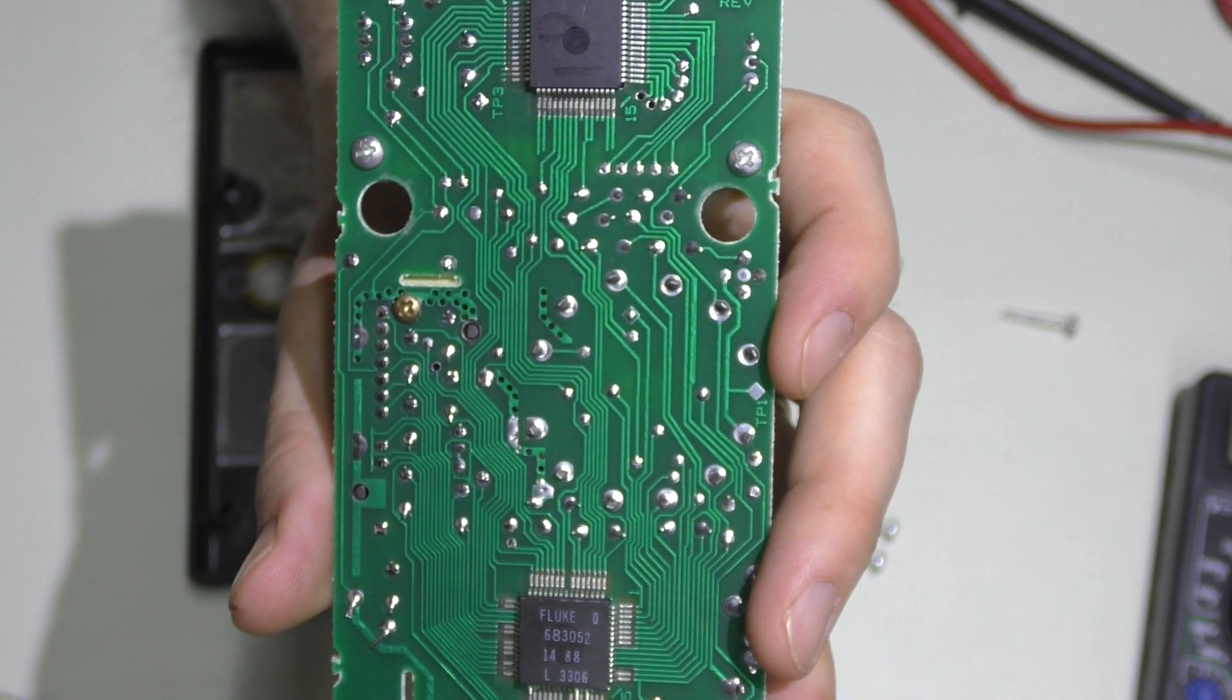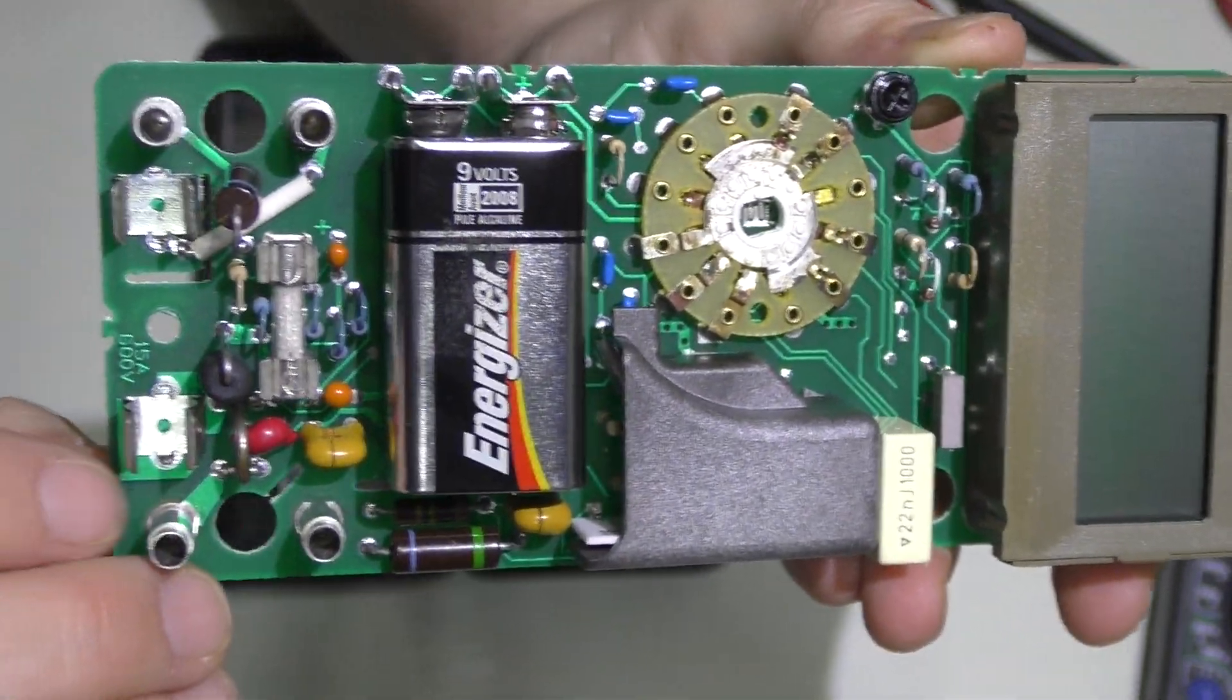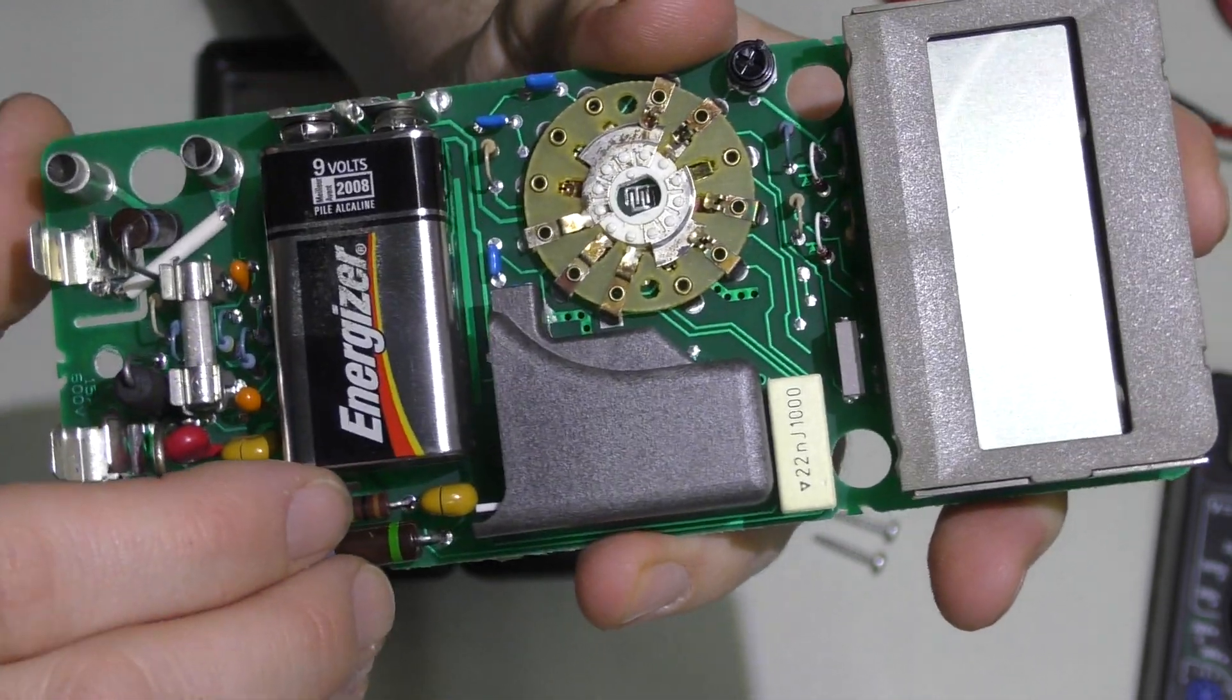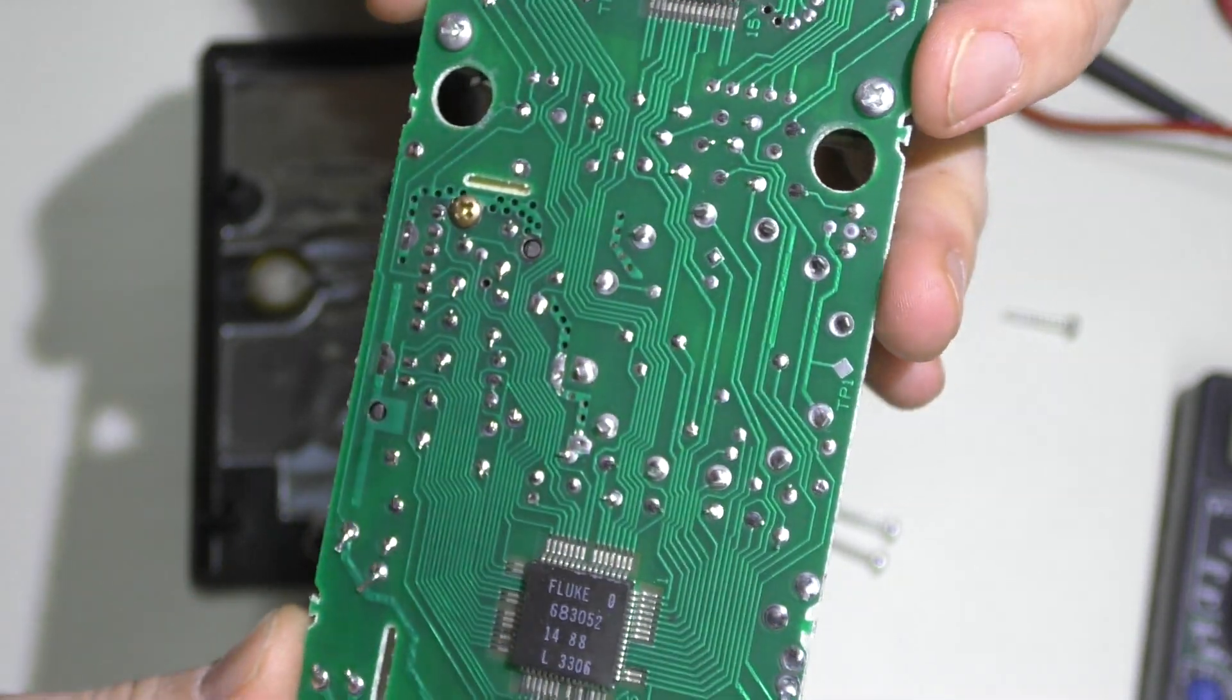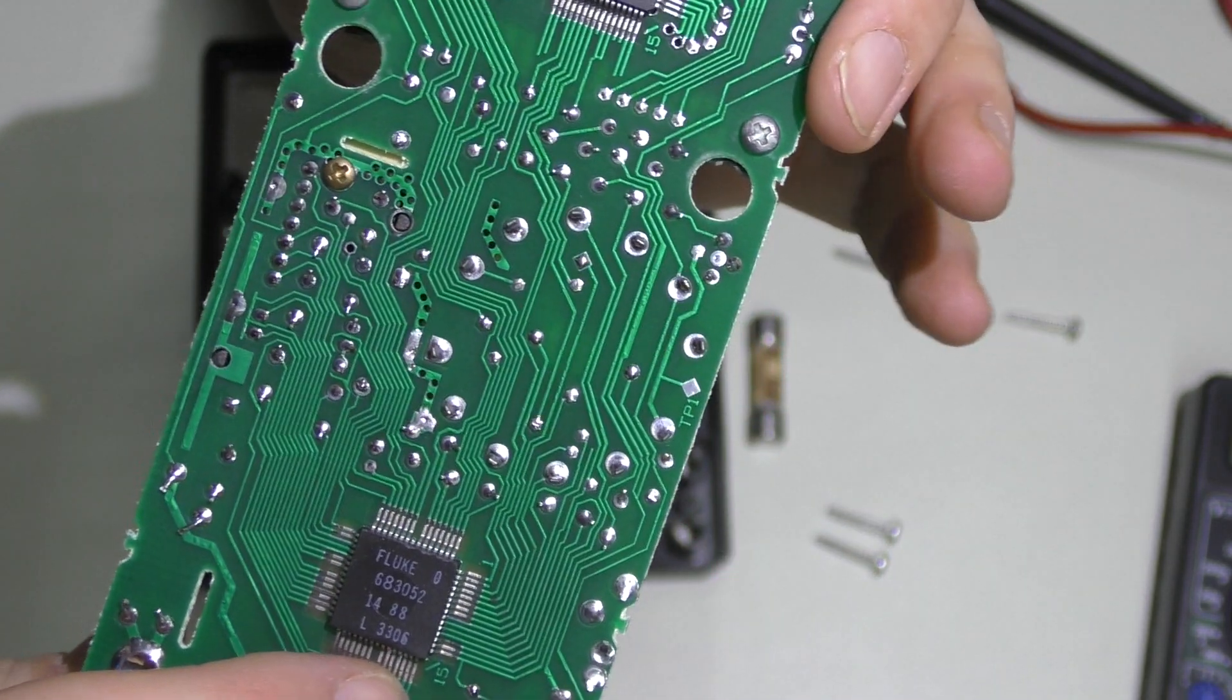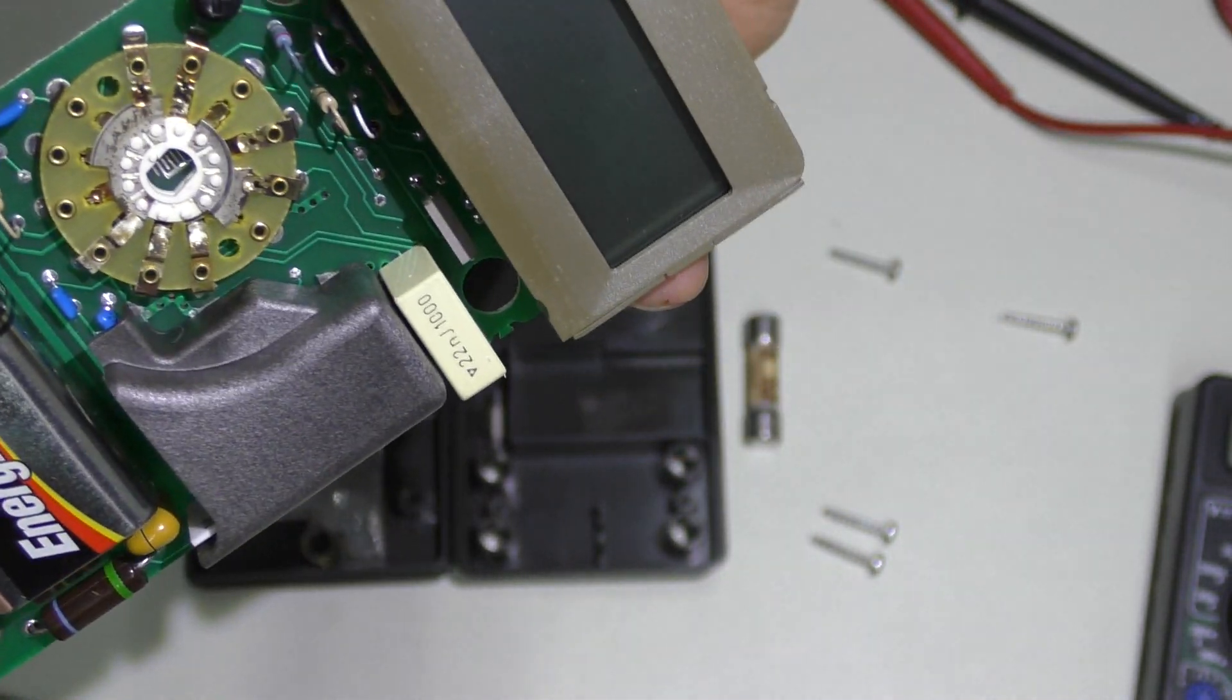Flip it back over. A nice up-close shot of that. There's pretty much—I don't want to say no surface mount components because there are the two surface mount chips in the back here—but as far as the passive components, from what I can tell, they are all through-hole mounted.